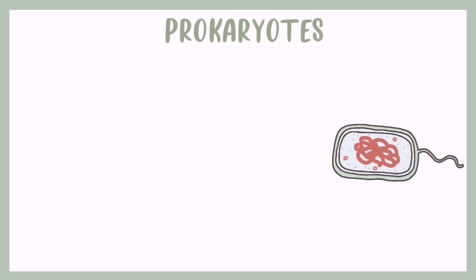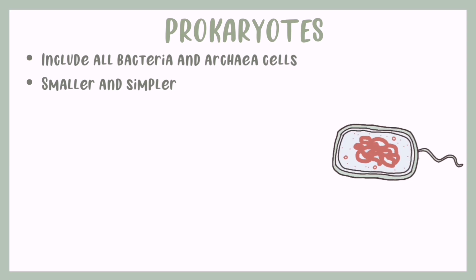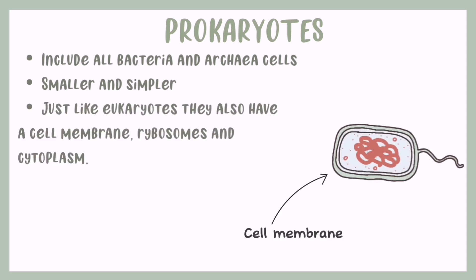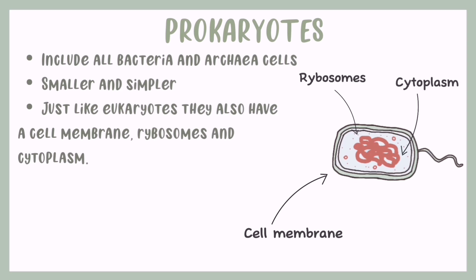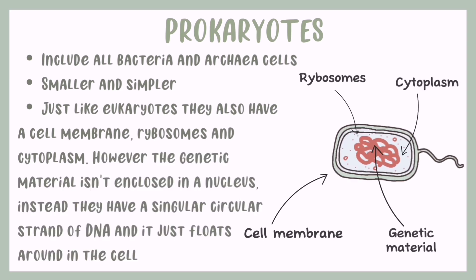Moving on to prokaryotes. Prokaryotes include all bacteria and archaea cells. They are smaller and simpler, and just like eukaryotes they also have a cell membrane, ribosomes and cytoplasm. However, the genetic material isn't enclosed in a nucleus. Instead, they have a singular circular strand of DNA, and it just floats around in the cell.